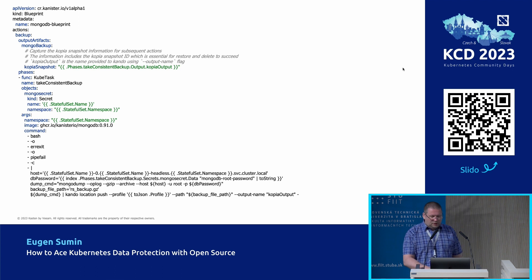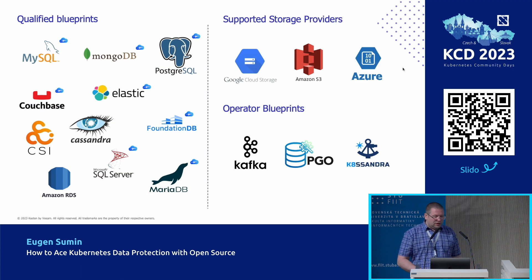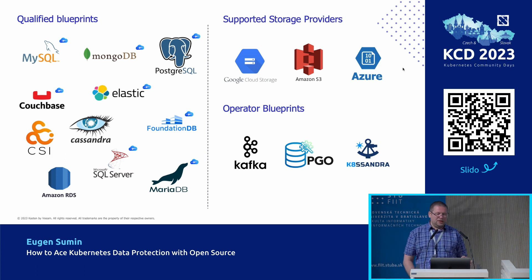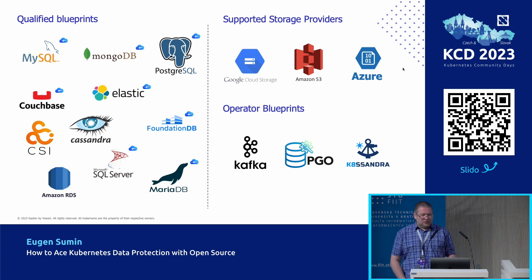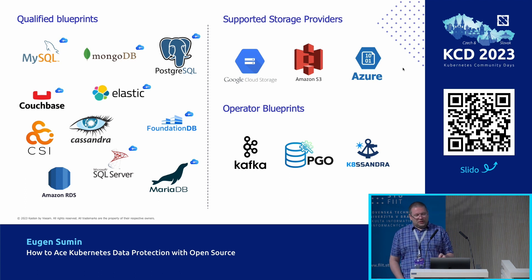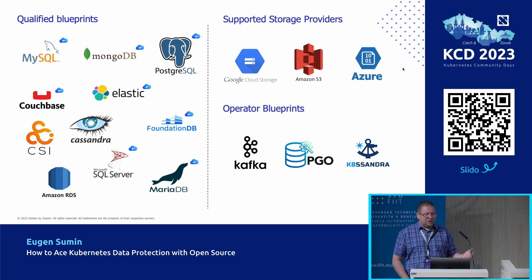In this simple case, we execute kube_task — a function provided by Kanister that executes a command within a pod in Kubernetes. Kanister has a list of qualified blueprints; each blueprint marked with the Kopia logo has been verified by Kanister maintainers. Kanister can also create profiles for S3, GCS, and Azure as backup targets, and has blueprints for the Kafka, Postgres, and Cassandra operators — acting as a wrapper to what those operators can do.